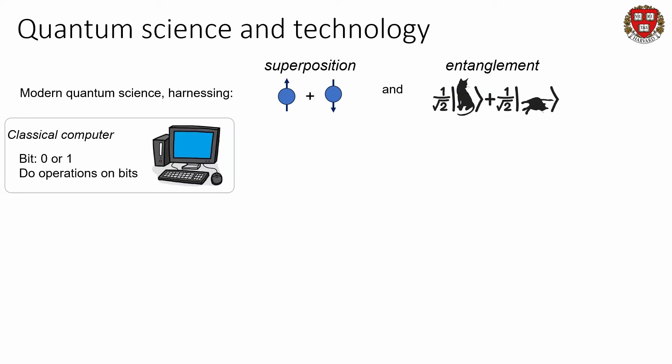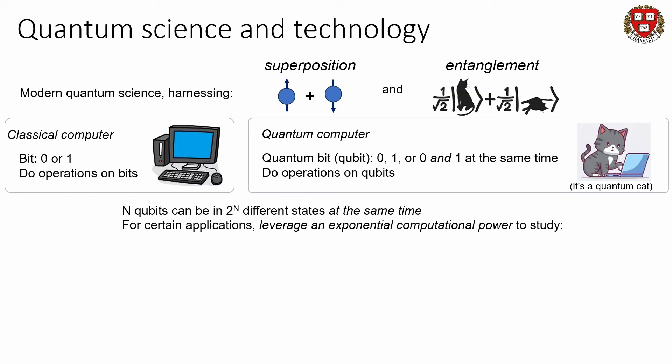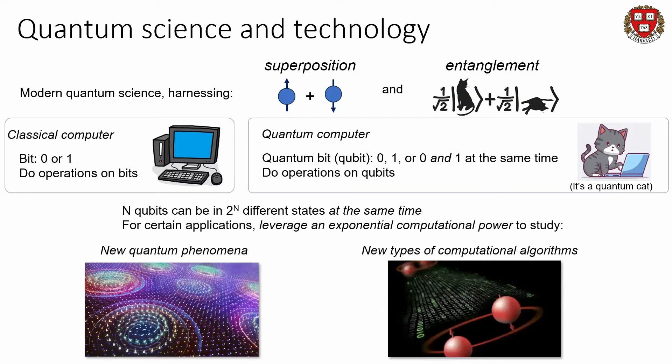In classical computers we have bits, and we do operations on bits, like 0 and 1. With quantum computers, we have qubits that can be 0, 1, and 0 and 1 at the same time, and then we do operations on qubits. Broadly, n qubits can in principle be in 2^n different states at the same time. If you're very clever, you can leverage this exponentially large space to get exponential computational power to study new types of quantum phenomena as well as new types of computational algorithms.